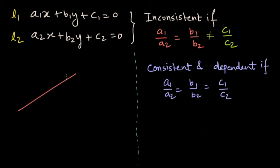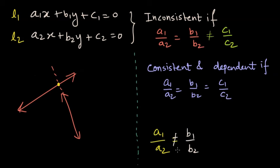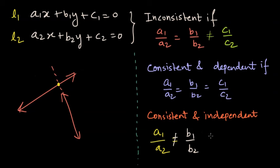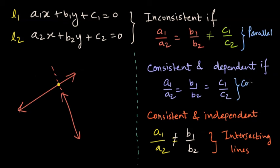Now let us look at another condition. When the two lines are not parallel and they intersect, there is only one solution, since two lines with different slopes can only intersect at one single point. In this case, the ratio a1 by a2 is not equal to b1 by b2, and such equations are called consistent because there is a single solution, but the equations of the two lines are independent — these are intersecting lines. So the three cases are: parallel lines, coinciding lines, and intersecting lines, and this is how by looking at the simultaneous equations, we can find whether a solution exists or not.